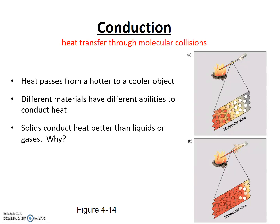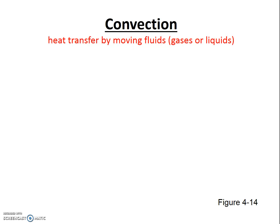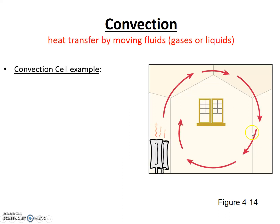Let's move on to convection. Convection is heat transfer by moving fluids. In physics, fluids refer to both liquids and gases, so convection is heat transfer by moving liquids and moving gases. In physical geography, this means heat transfer by moving water and air currents. Your textbook distinguishes between convection — vertical air movement — and advection — horizontal air movement — but for our purposes we'll lump them together as one big convection current.